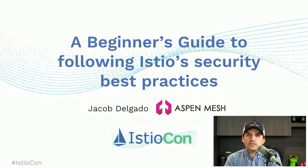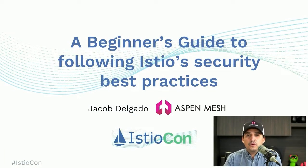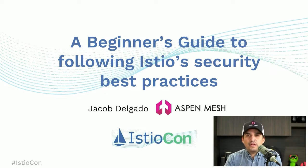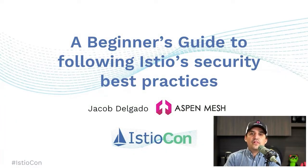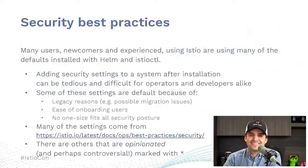Hello, my name is Jacob Delgado. I am a principal engineer at Aspen Mesh who has been working in open source for the past two years. I'm a co-lead of the product security working group and the environments working group, and today we will be discussing a beginner's guide to following Istio's security best practices.